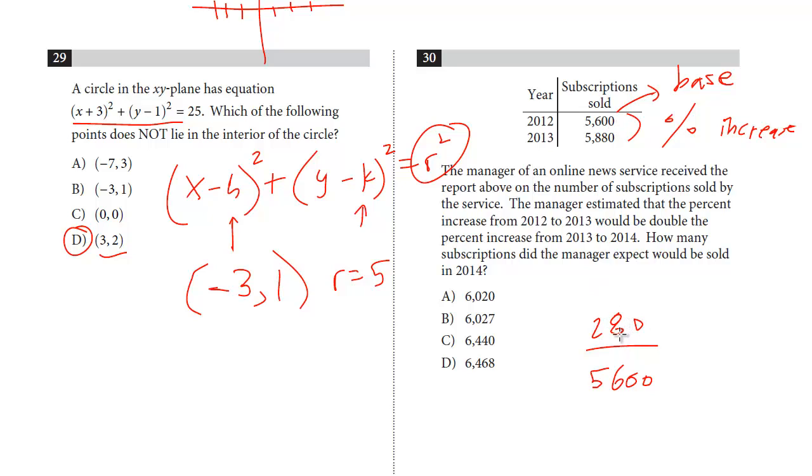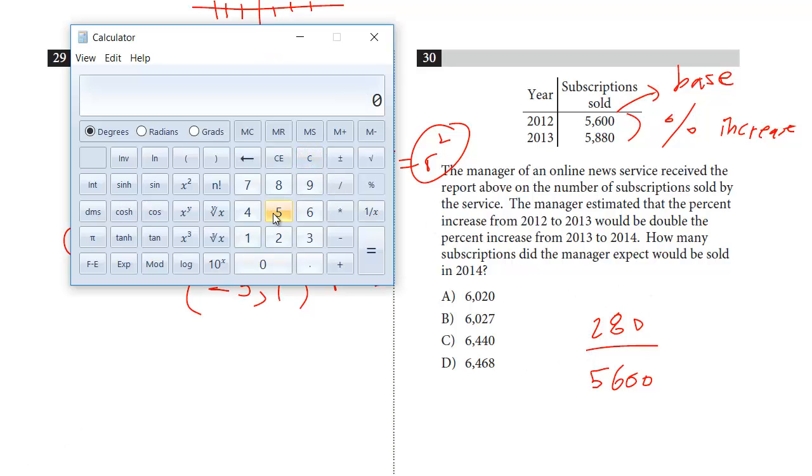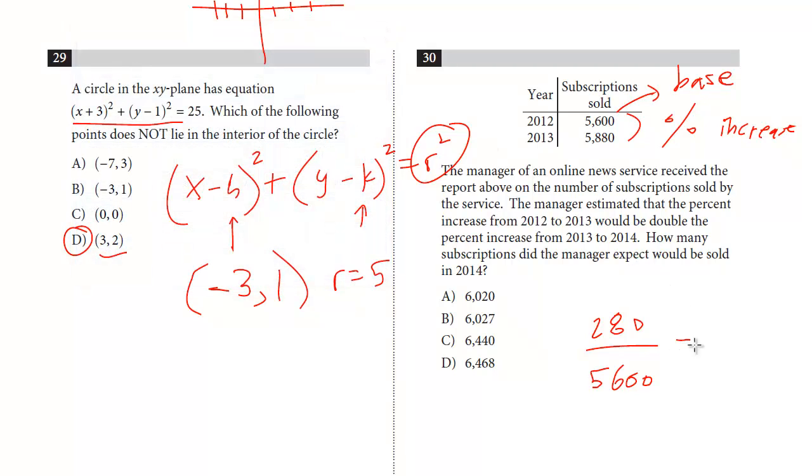That is the number it increased by. 280 is the change. If it were decreased, the 5600 would be on top, and then you'd put the change. And you don't need a negative because that's what decrease means. And so first, we're going to get this ratio, which is 280, and we're going to divide that by 5600.